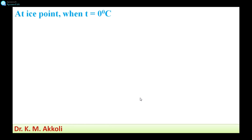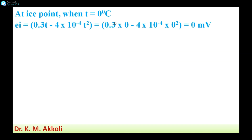First, at ice point when T equals 0 degrees Celsius, we find the EMF. Substituting T equals 0 into the equation E = 0.3T minus 4 into 10 raised to minus 4 times T squared, both terms become zero, giving EMF at ice point E_I equals 0 millivolts.